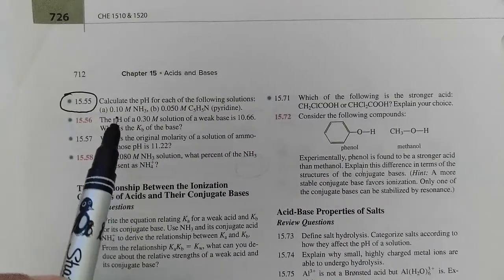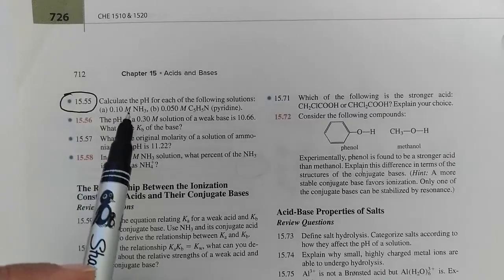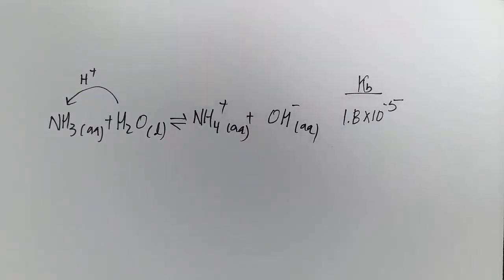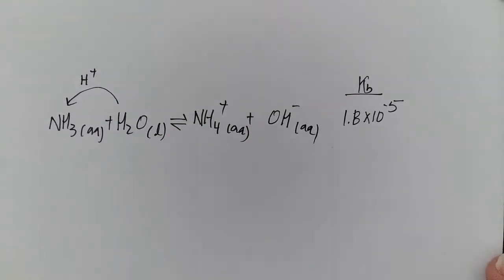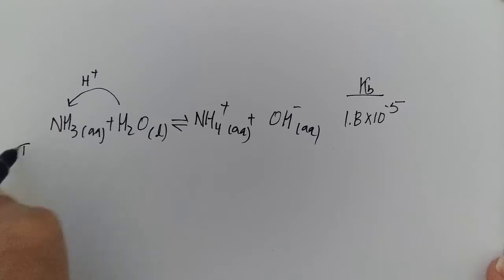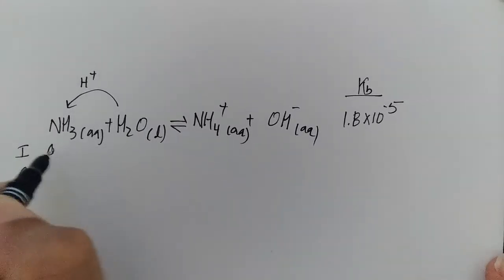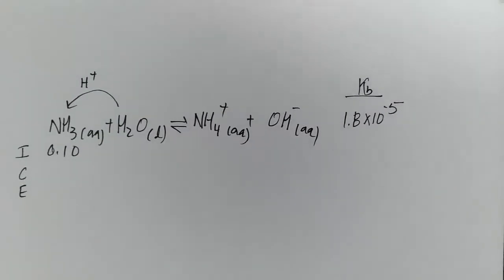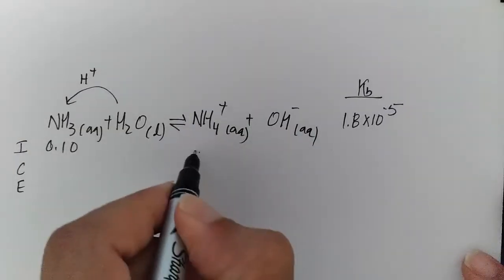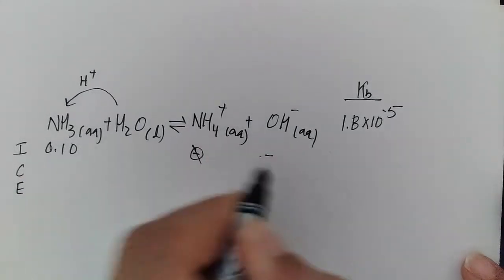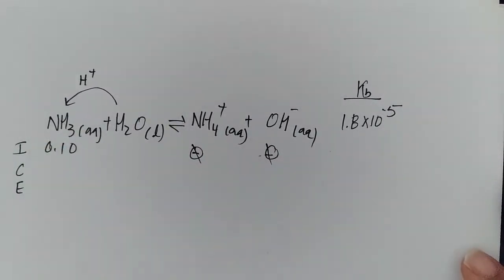So now it's a matter of ICE tables. We use an ICE table because these are weak bases and not strong bases. If there are strong bases we would just plug into our pOH equation. In our ICE table we have initial, change, and equilibrium. We start with 0.10 and initially we have none of this and none of that, or we can say zero. We don't care about water because it's a liquid.